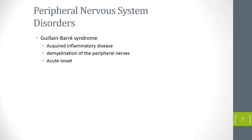Clinically, Guillain-Barré syndrome is defined as a rapidly progressive weakness of the limbs and loss of tendon reflexes. It is technically the most common cause of acute paralysis today — a role previously held by poliomyelitis.